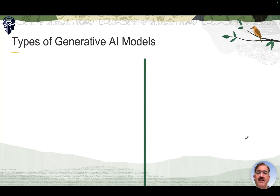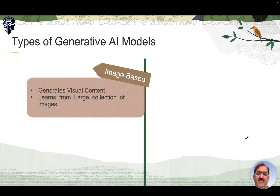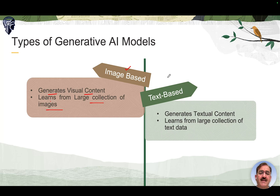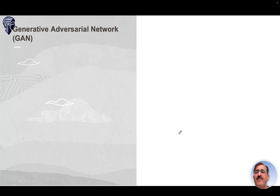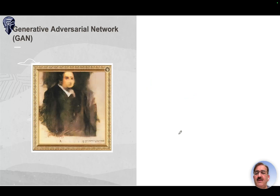There are various types of Generative AI models. Broadly, the two most common are: image-based models, which generate visual content by learning from large collections of images; and text-based models, which generate textual content by learning from large collections of text data. There are also video generation models and Generative Adversarial Networks.